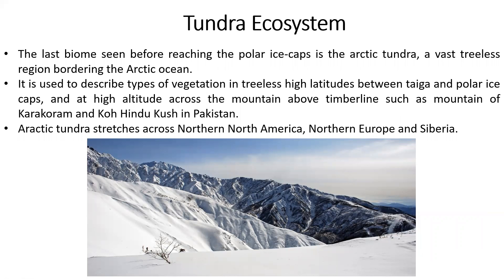The tundra ecosystem is completely opposite to the desert. It is found near polar ice caps — at the south pole and north pole there are ice caps. The last ecosystem you encounter before reaching polar ice caps is the tundra. It is a treeless region with no drought. The Arctic Ocean forms its border. Vegetation types include treeless zones between the taiga and polarized caps, and high altitude zones above the timberline on mountains.